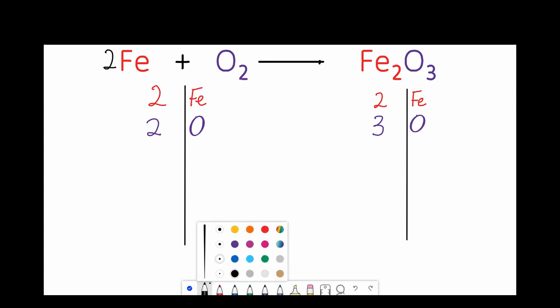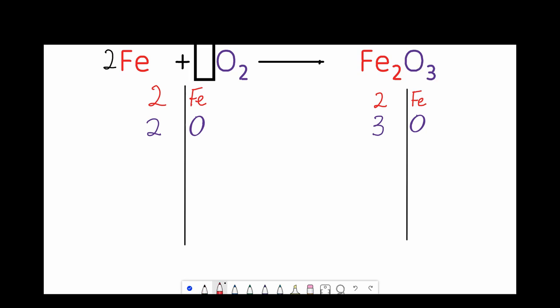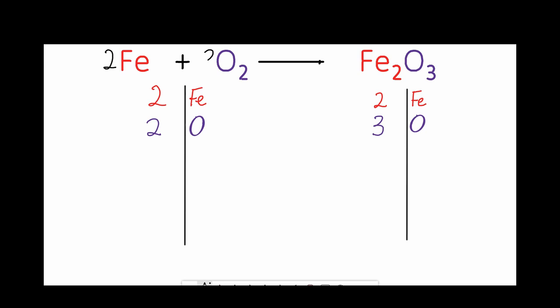So our iron is balanced now, but the oxygen isn't quite balanced and my rule of doubling doesn't really work. But I'm going to show you guys a handy trick I use whenever I feel like I'm stuck. So I'm going to multiply the oxygen on the left by the number in the subscript on the right. You're probably thinking what did you just say? Watch the screen. So I'm going to multiply the oxygen on the reactant side by three, which is the number in the subscript next to the oxygen on the product side.